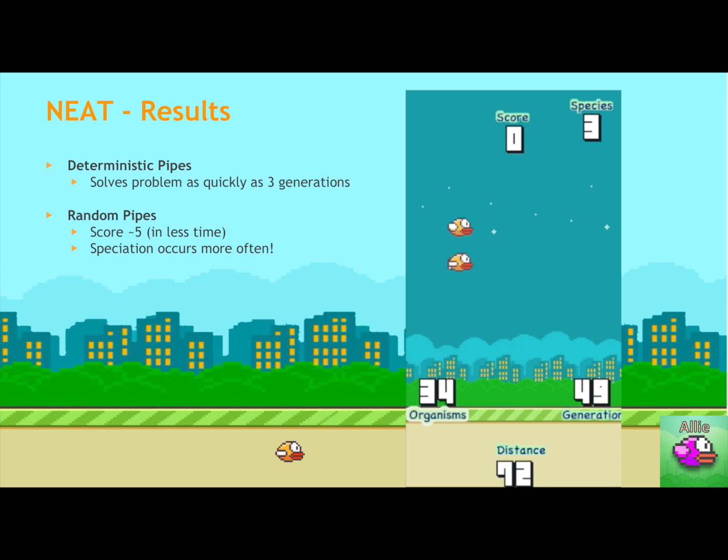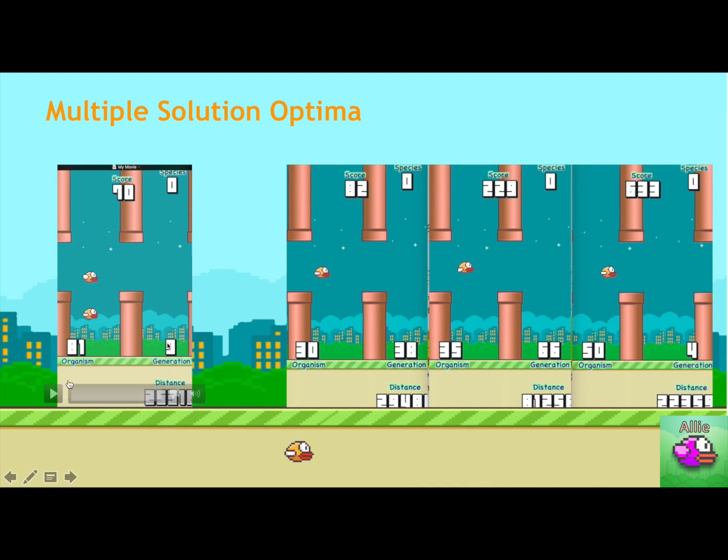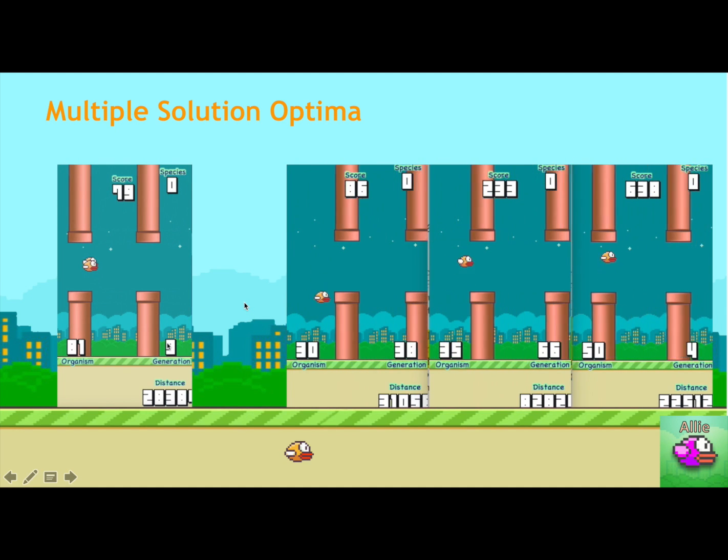And then here are some results for our implementation of NEAT. We can solve deterministic pipes as quickly as three generations, and it can do fairly well on random pipes in less time. And for this random pipe problem, speciation occurs more often than it would for deterministic pipes, because again, we're trying to solve a more complex problem. Because this is a rocky landscape, there are multiple solutions to this problem. And so here are many different ways in which birds can solve the deterministic pipe problem. Each one looks quite different.